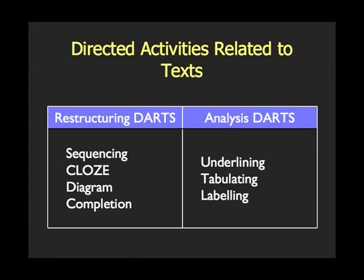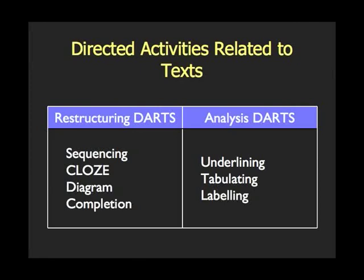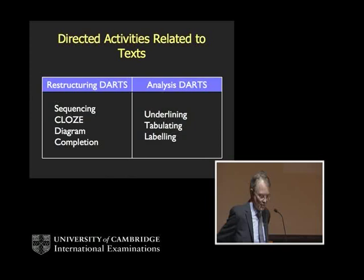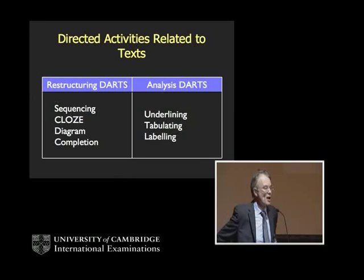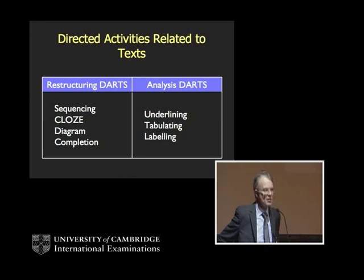There are basically two forms of DARTs: restructuring DARTs, where you have to put text together to construct meaning; and analysis DARTs, where you have to deconstruct it and take it apart. Examples of restructuring DARTs include sequencing — putting sentences into a meaningful order — and the cloze procedure, where you have gaps in the text. To my mind, that's the most abused one. It's not an activity to be done on your own, because if you do it on your own, you don't access the resource of the community in helping you to see different ways of constructing the meaning.